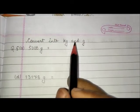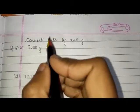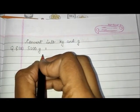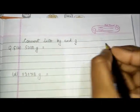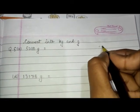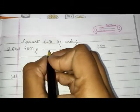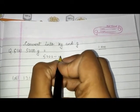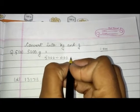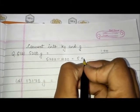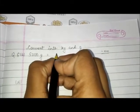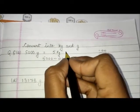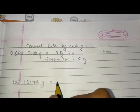Next we convert into kilograms and grams. Here it is given 5000 grams. To change to kilograms, we divide by 1000. So 5000 divided by 1000 will be 5 kilograms. So 5000 grams equals 5 kilograms and 0 grams.